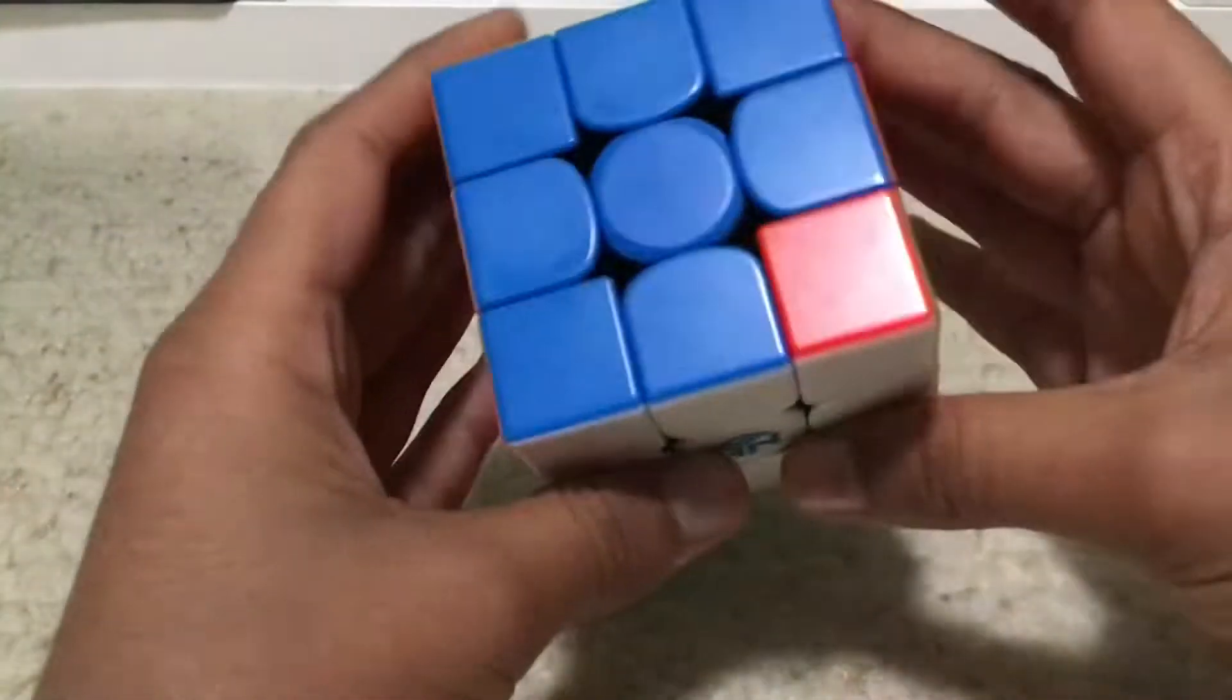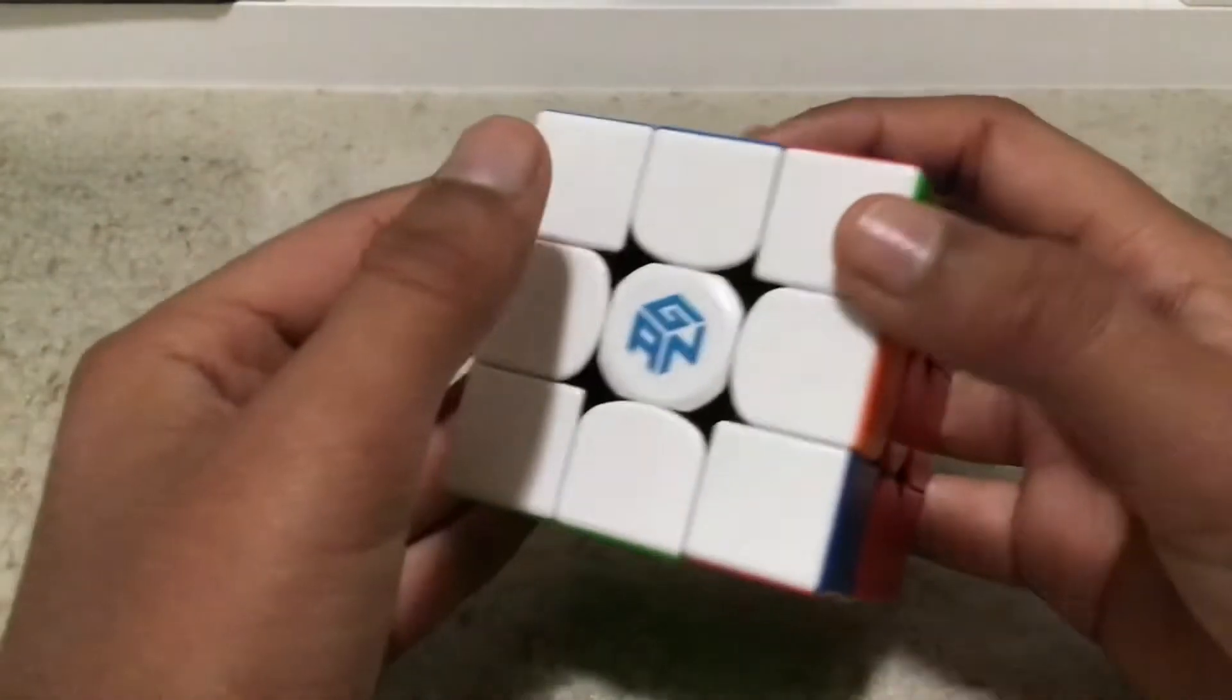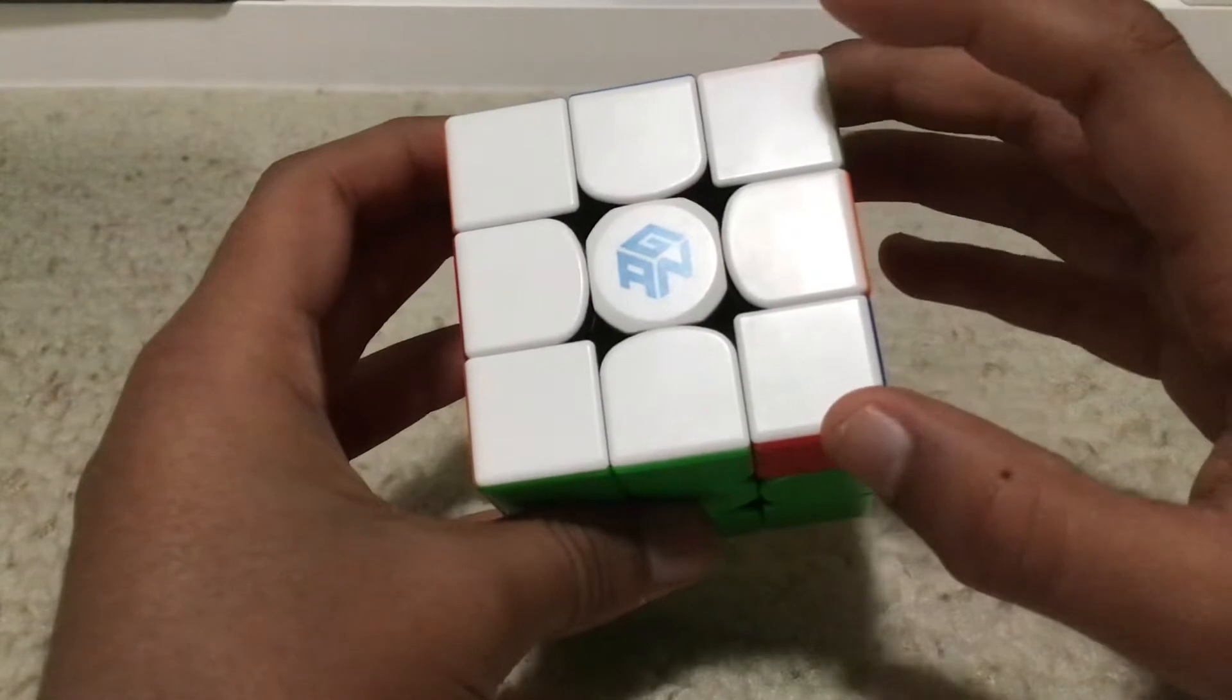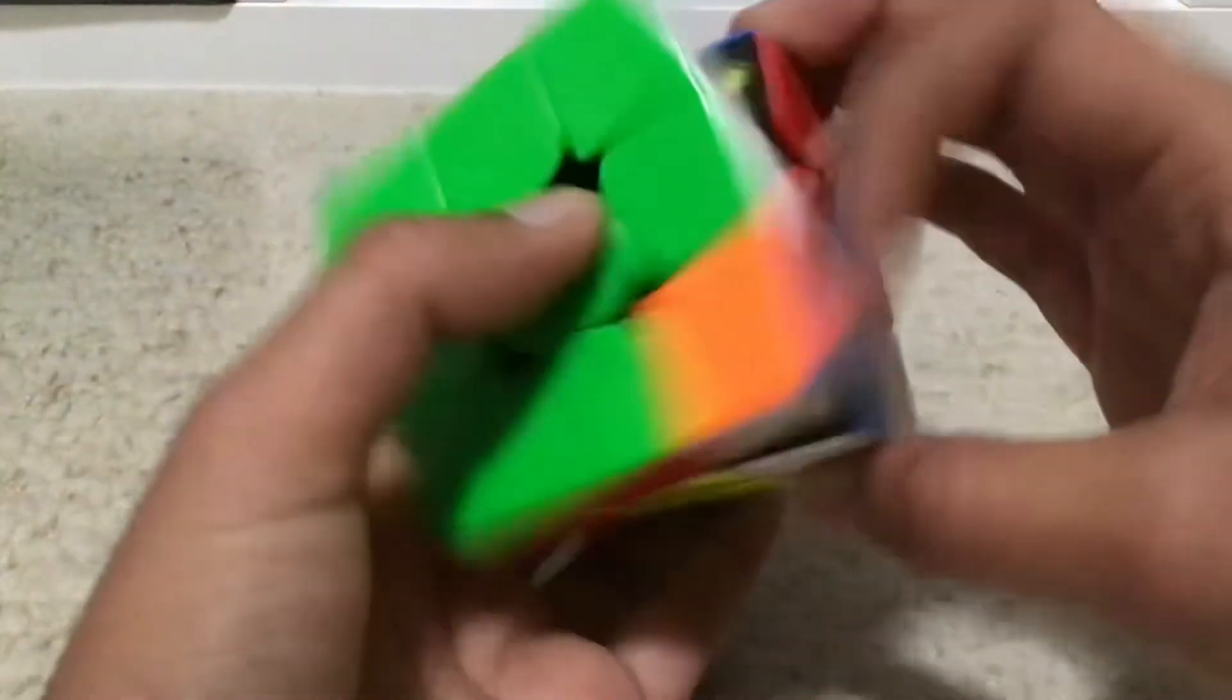So this is how the T-perm looks like. You basically swap these two edges and these two corners. To undo the T-perm, you need to do another T-perm.